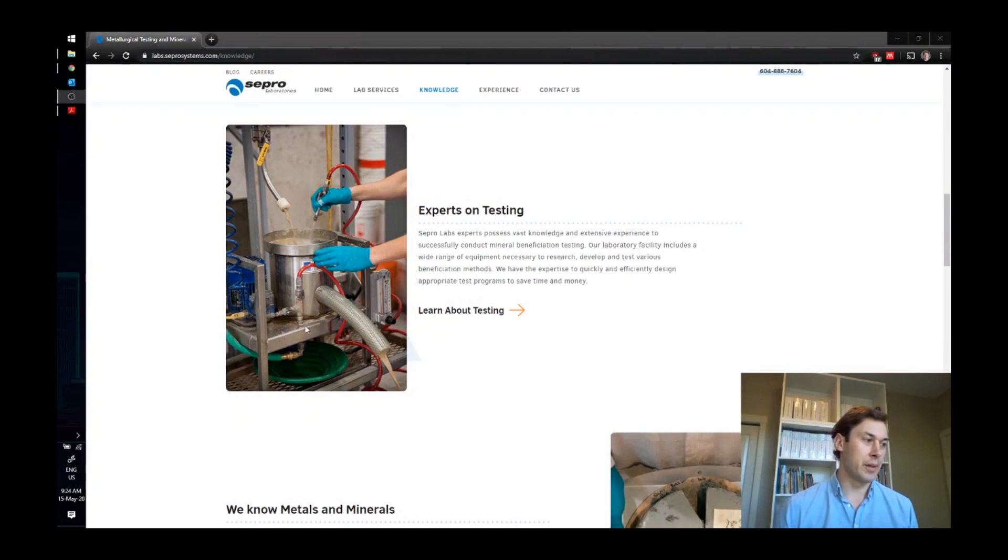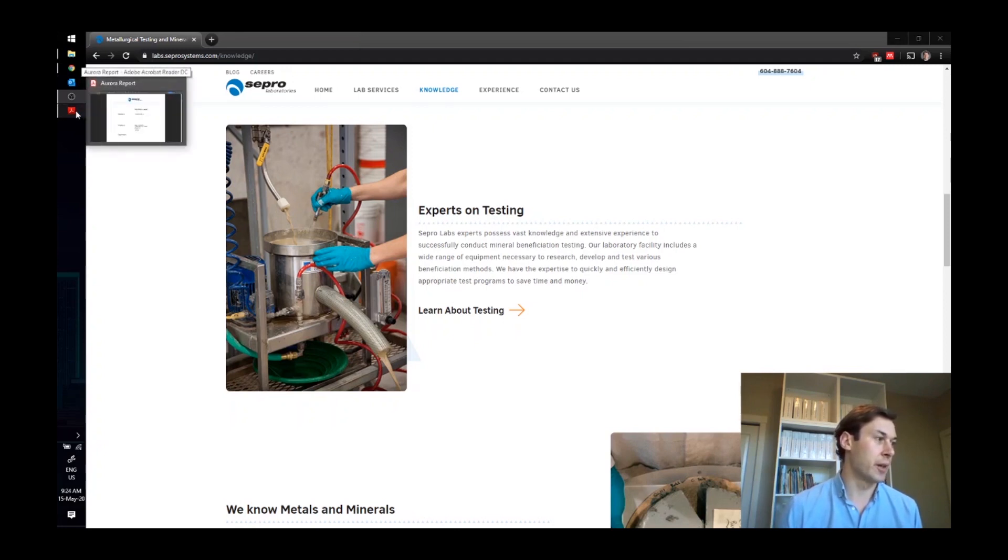This is the equipment on which the test work's done. This is a Falcon L40. If a lab has a Nelson, they'll use a Nelson MD3. Similar results are produced from both of these pieces of equipment. At Sapro Labs, we use the Falcon L40. There's a centrifugal bowl inside this. In the L40, it's a four-inch bowl. In the MD3, it's a three-inch bowl. Feed comes in, it's concentrated inside, tailings come out, and the concentrate is recovered in a batch fashion after the test is done. The test charge for this is typically 10 kilograms.